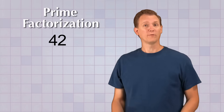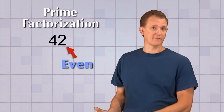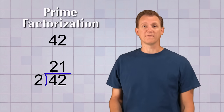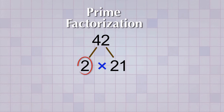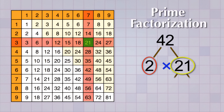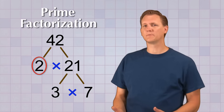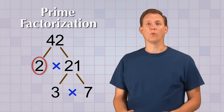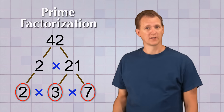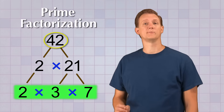Let's try one more to make sure you've got it — let's find the prime factorization of 42. Since 42 is an even number, we can divide it by 2: 42 ÷ 2 = 21, so we can factor 42 into 2 times 21. 2 is prime, so we can't factor it anymore. But 21 can be factored into 3 times 7, which you might recognize from your multiplication table, or figure out through divisibility tests. Both 3 and 7 are prime, so we're done. Bringing down the 2, the prime factorization of 42 is 2 times 3 times 7.